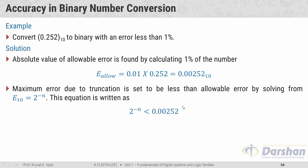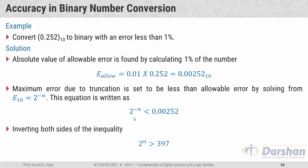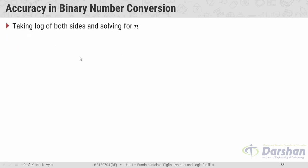The maximum error due to truncation must be less than the allowable error. For a binary fractional number, this means 2^(-n) must be less than 0.00252. To find n, we invert both sides: 2^n must be greater than 1/0.00252, which equals 397.